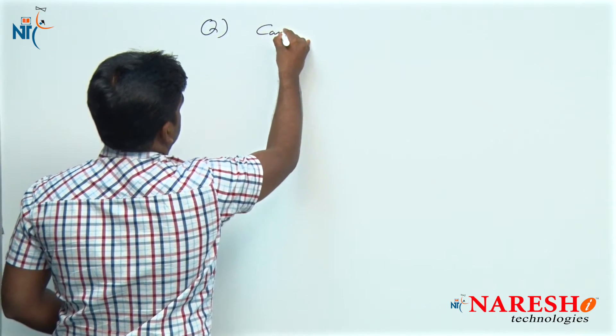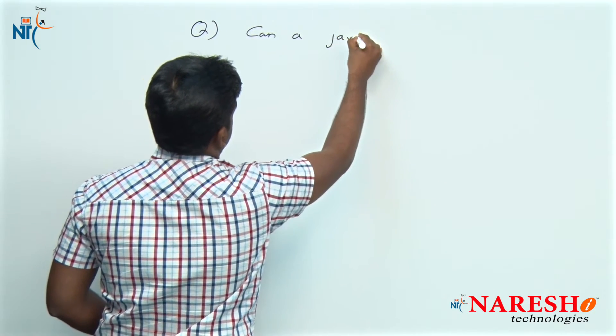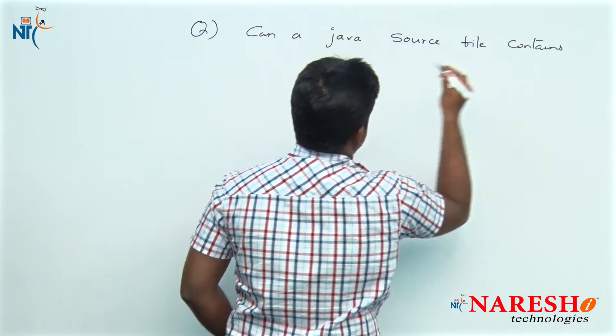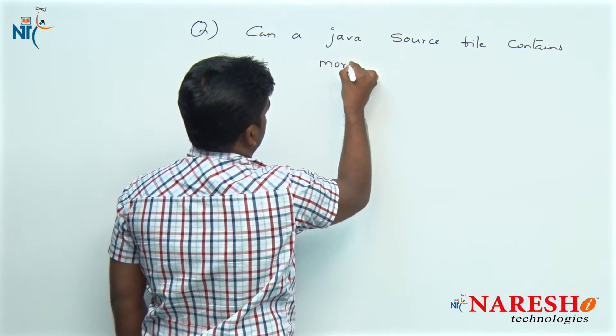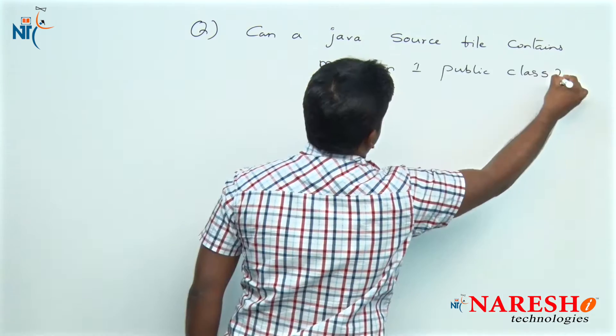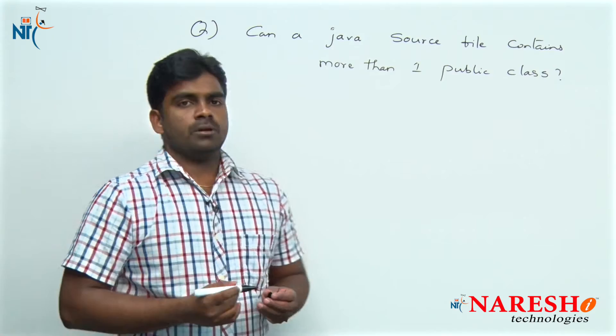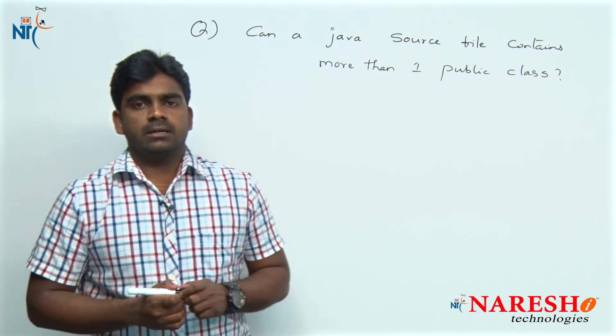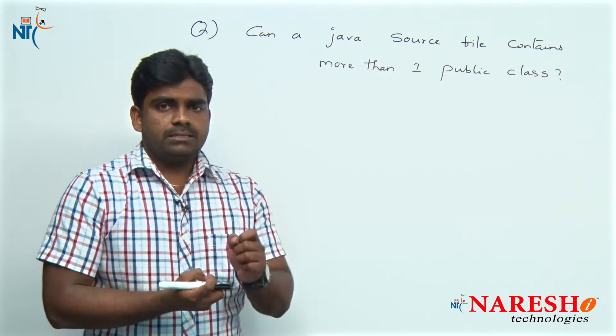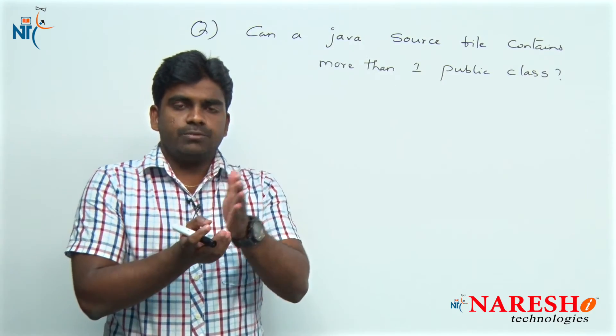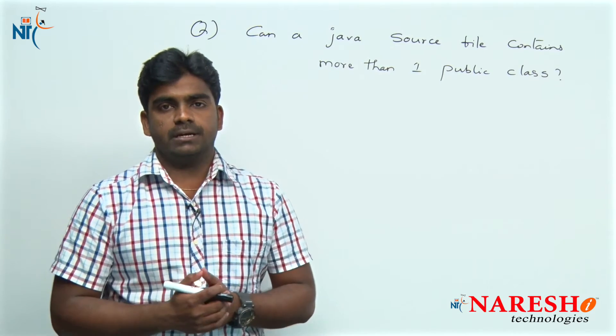Hi everyone, welcome to Nourish Technologies, this is Srinivas. In this session, we are going to discuss one interview question in core Java: can a Java source file contain more than one public class? A public class means the class is defined with the access modifier public.